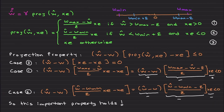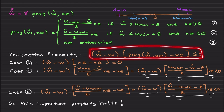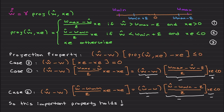Before moving forward, I would like to mention an important projection property. This property holds: w̃ᵀ · (Proj(ŵ, ·) − ẇ) ≤ 0. We care about this because we are going to use it in stability proofs — it is used in most research papers and technical reports. Let's prove this property.